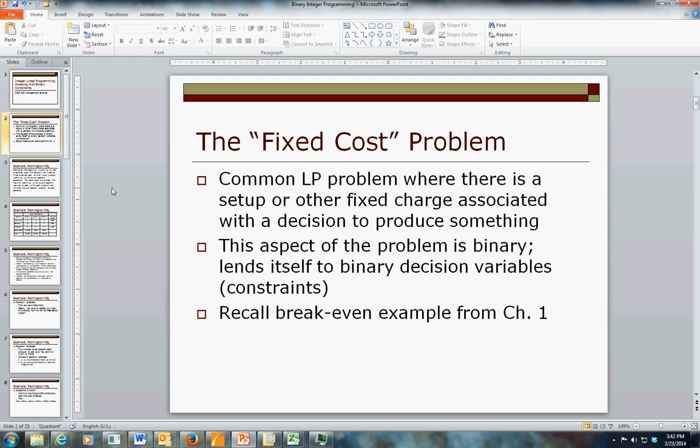One would have been how many clocks to make, including the possibility of zero. And the other decision, not an independent decision by the way, would be whether or not to actually pay the fixed cost to set up and go into the business in the first place. So that fixed cost related decision is binary, zero-one in nature, and it makes the model a lot cleaner because then the fixed cost attaches to the binary decision and the variable cost attaches to the production quantity decision.